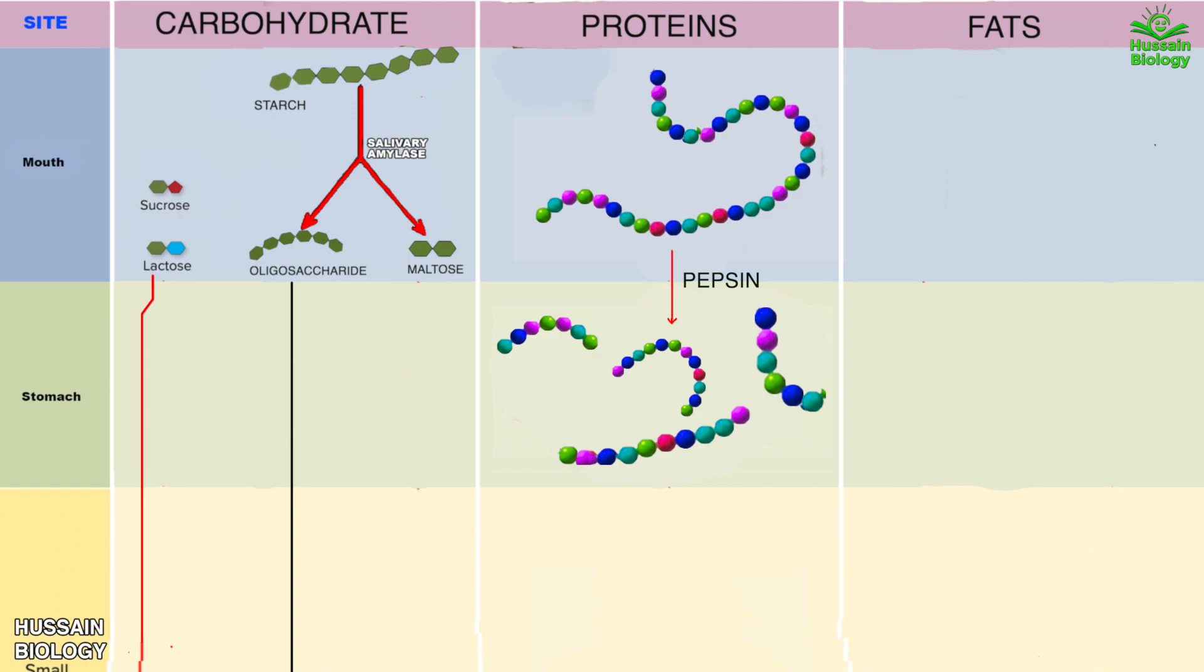Then these small peptides reach the lumen of small intestine as shown in the animation where they are acted upon by trypsin enzyme, chymotrypsin and carboxypeptidase. And these enzymes convert small peptides into dipeptides as shown in the diagram.